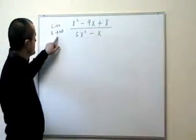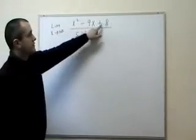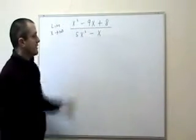In this video I want to show you how to calculate the limit as x goes to infinity of x squared minus 9x plus 8 all over 5x squared minus x.